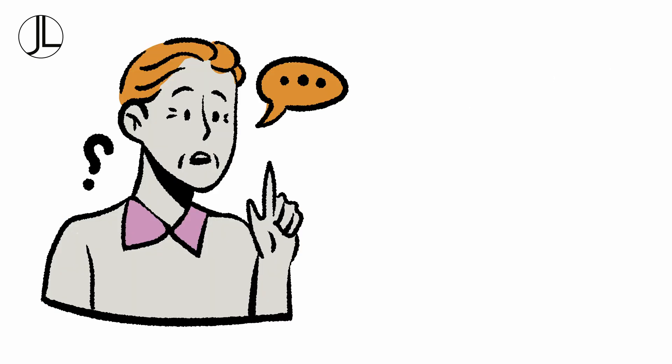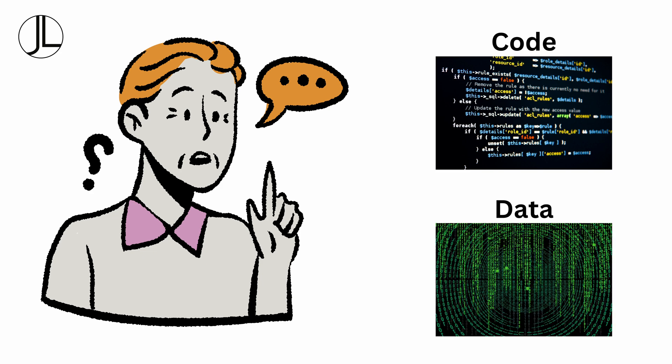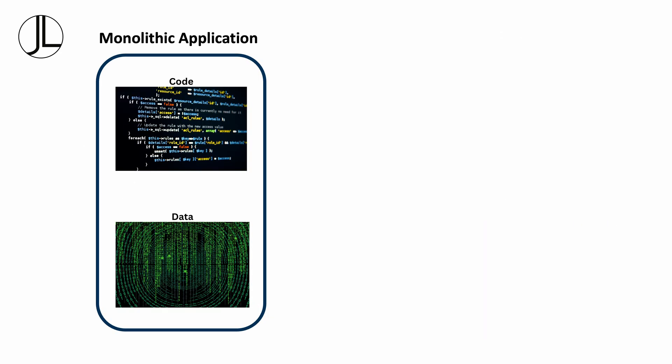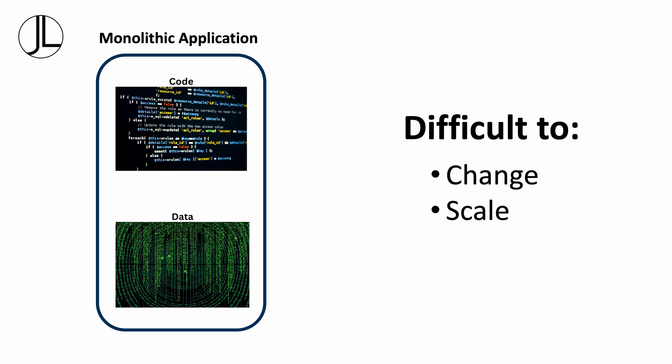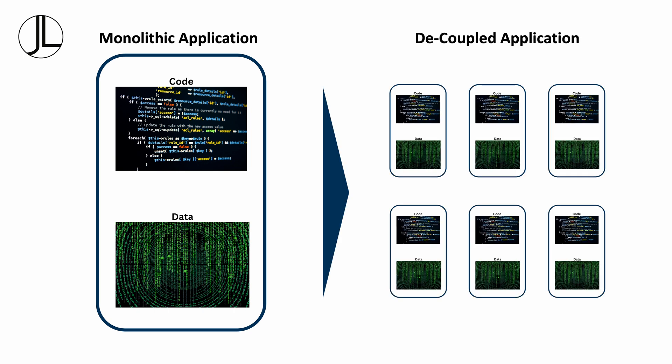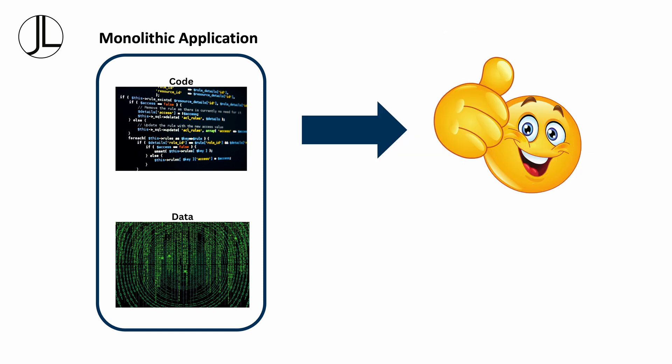There are two critical implications: code and data. In the beginning, all code and data were tightly coupled into monolithic applications. This made them difficult to change and scale, especially in light of increasing digitization and disruption. The answer was to decouple code and data into several independent components that each could scale and be changed independently. Decoupling code was relatively easy, and the rewriting of program code from monolithic to more component-like architectures has been going on for many years.